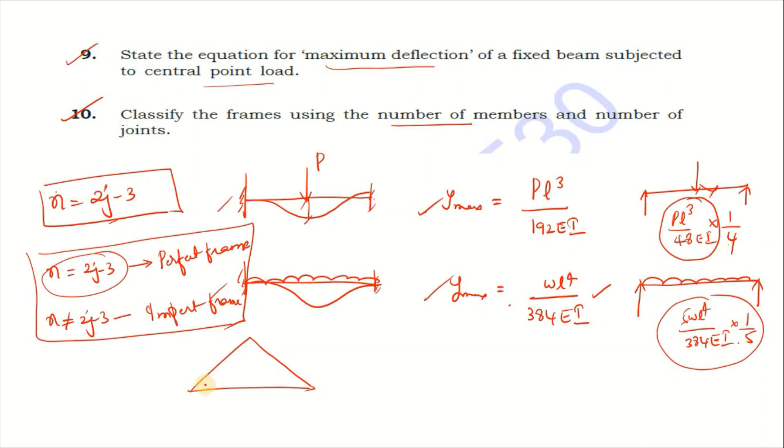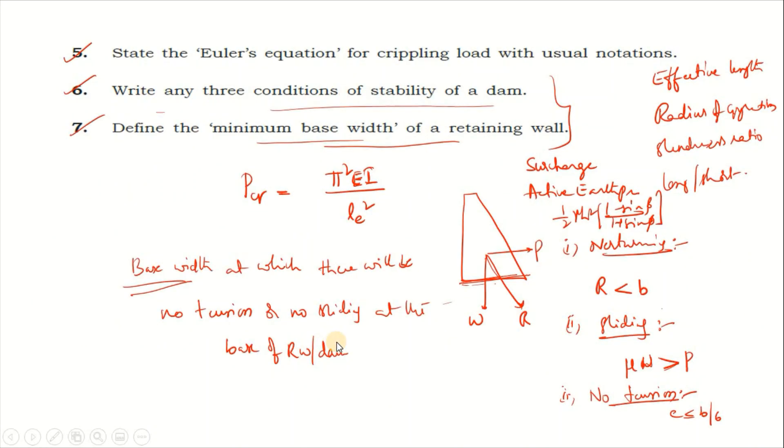If that equation is not satisfied, then it's an imperfect frame. For example, if you have three members and three joints, n = 2j - 3 is satisfied, so this is a perfect frame. For classification, it's perfect frame and imperfect frame based on this equation n = 2j - 3. These are the short answer questions prepared.